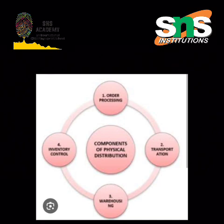Next is the indirect channel. When a manufacturer employs one or more intermediaries to sell and distribute their product to the customers, it is called indirect selling. In this, goods move from the point of production to the point of consumption through a distribution network.